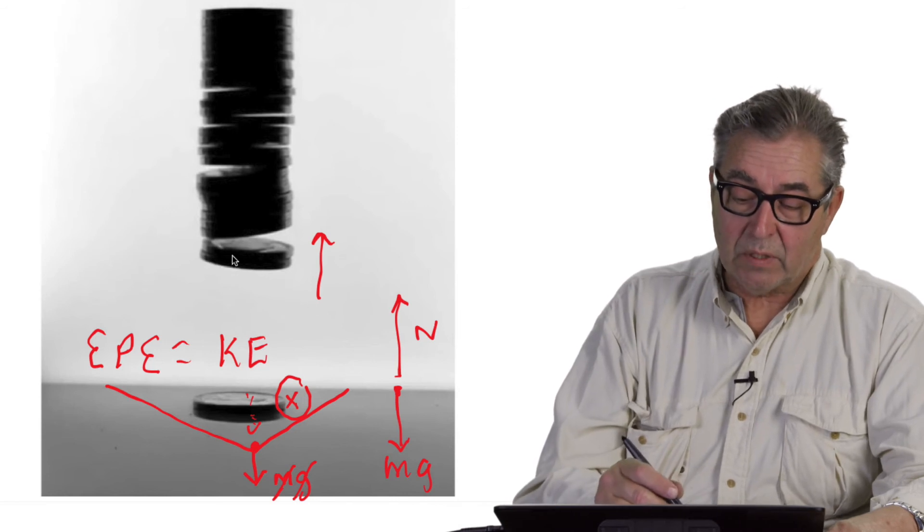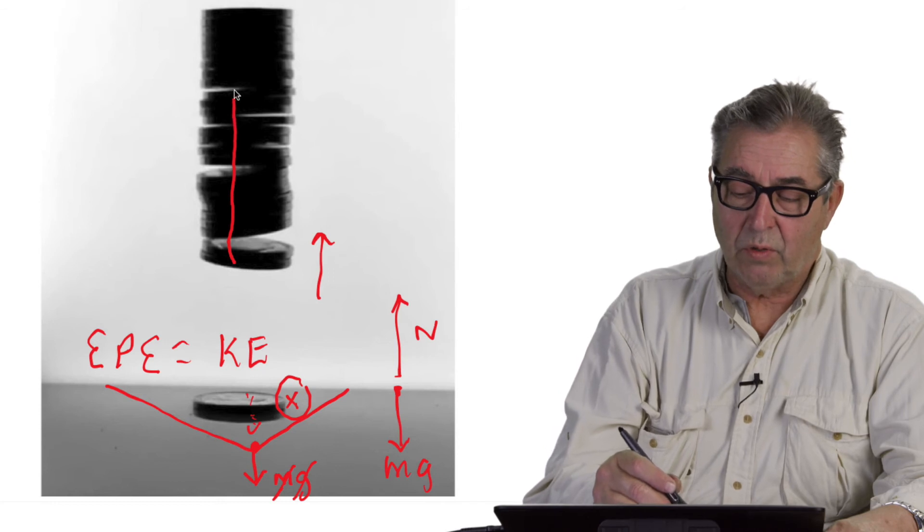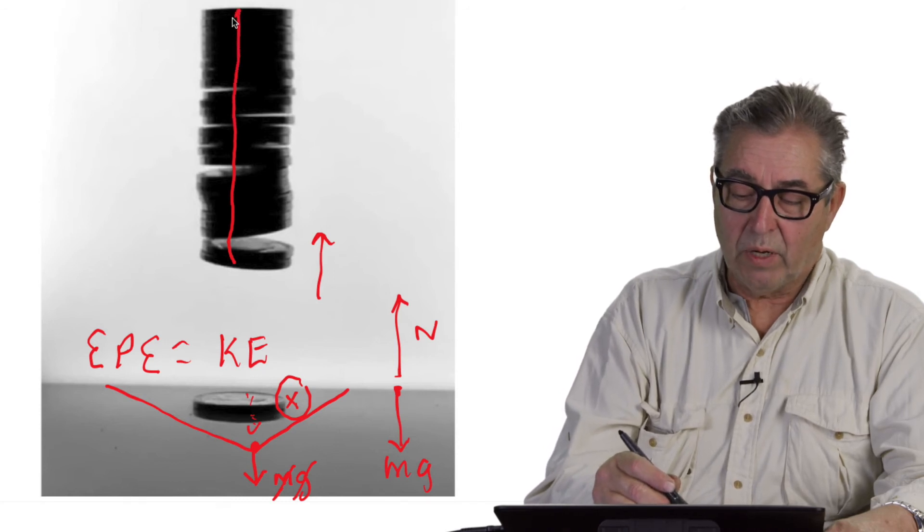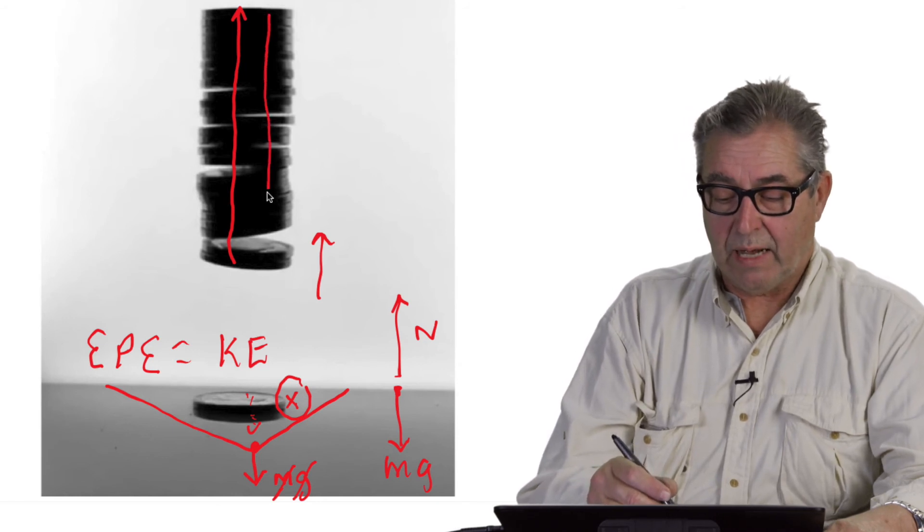What actually happens is that at the moment of drop, a shock wave travels through the coins and reaches the top of the coins, reflecting off the top, coming back down,